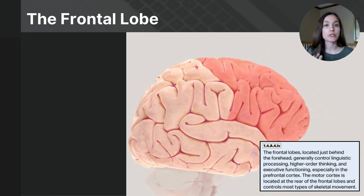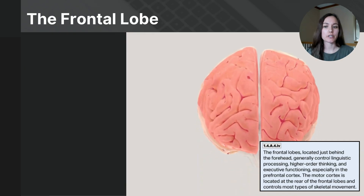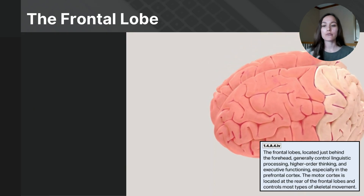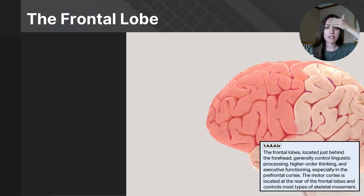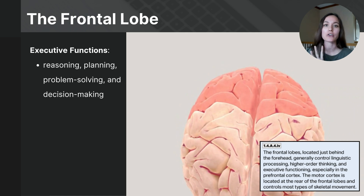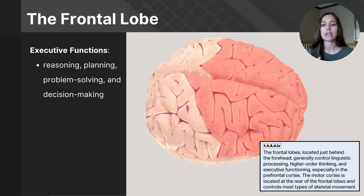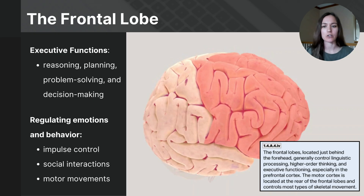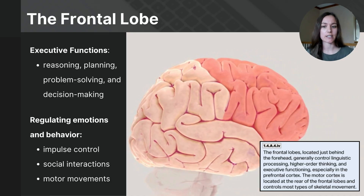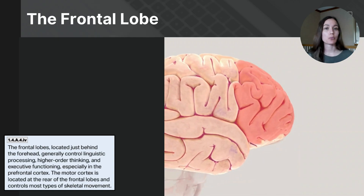The cerebrum is also divided into lobes, and these lobes almost mirror each other on each hemisphere. The lobes of the cerebral cortex have very specialized functions. First is the frontal lobe — the largest of the four. It's located at the front of the brain, extending from the forehead back to the start of the parietal lobe. The frontal lobe is crucial for higher cognitive functioning: reasoning, planning, problem-solving, decision-making, emotions, impulse control, social interactions, and movement. It includes specialized areas like the prefrontal cortex, motor cortex, and Broca's area.